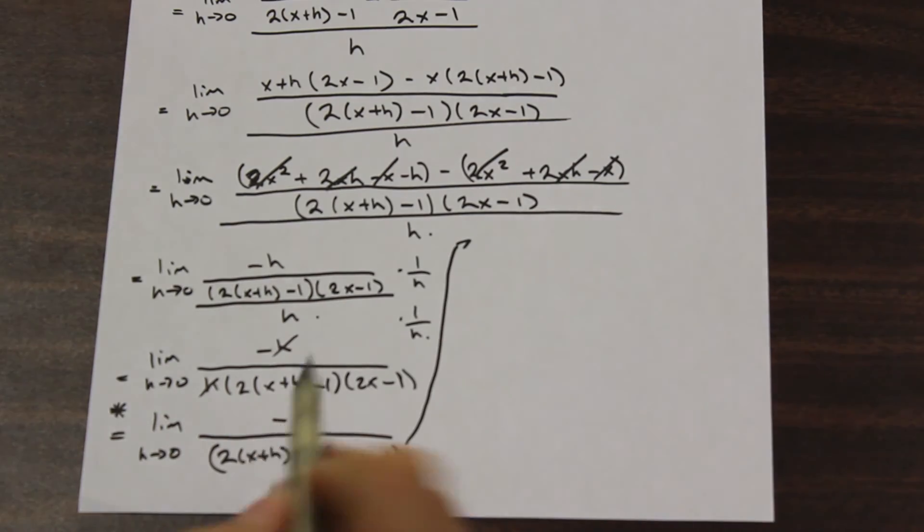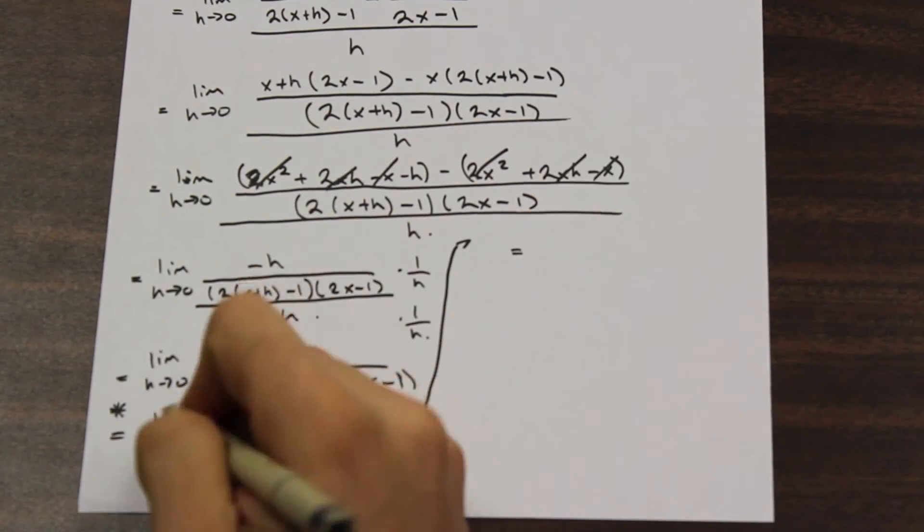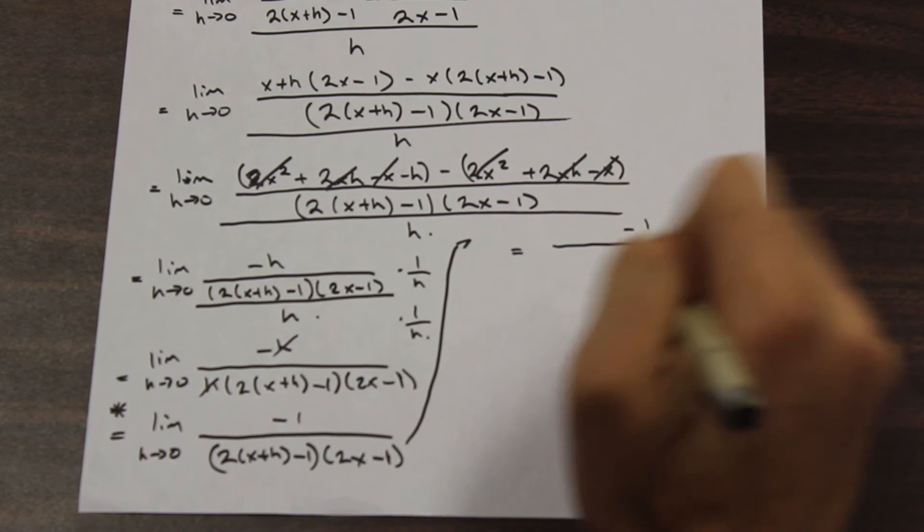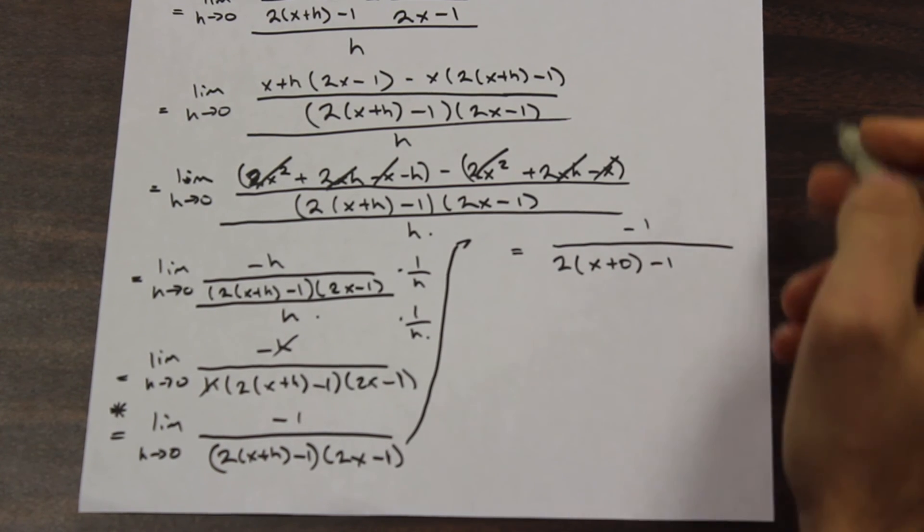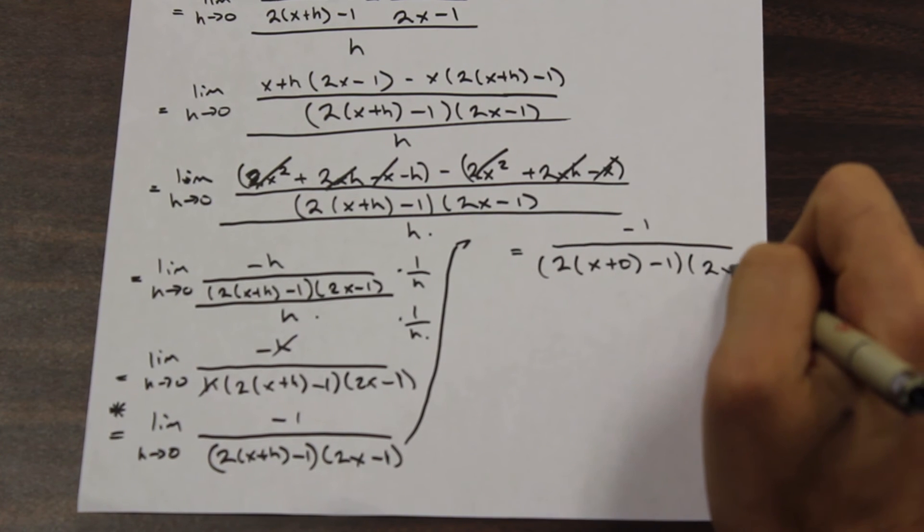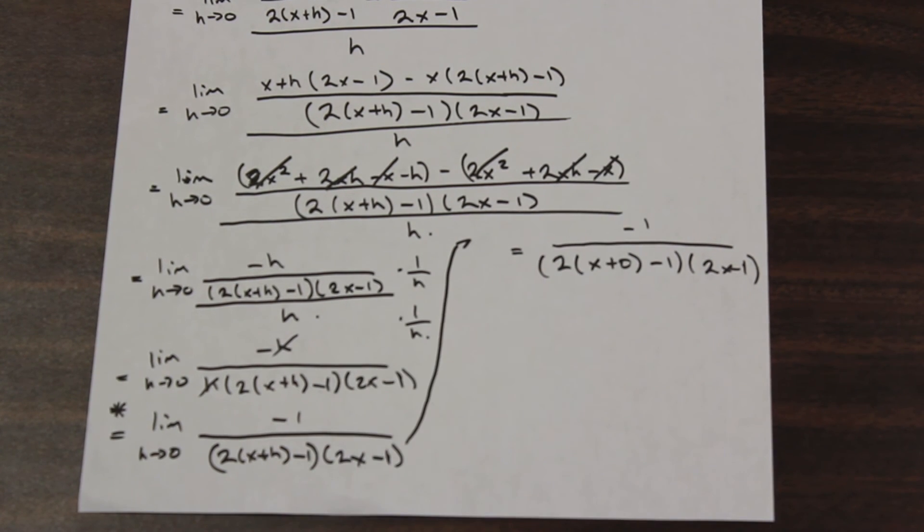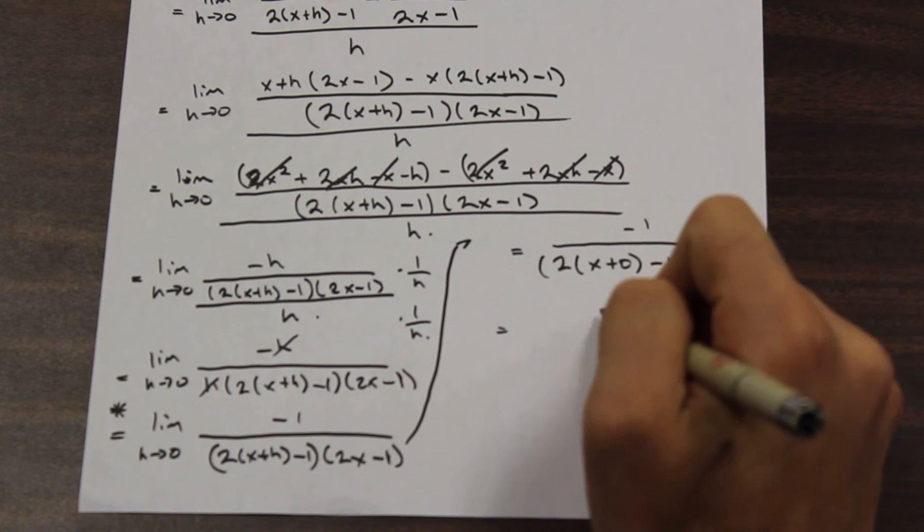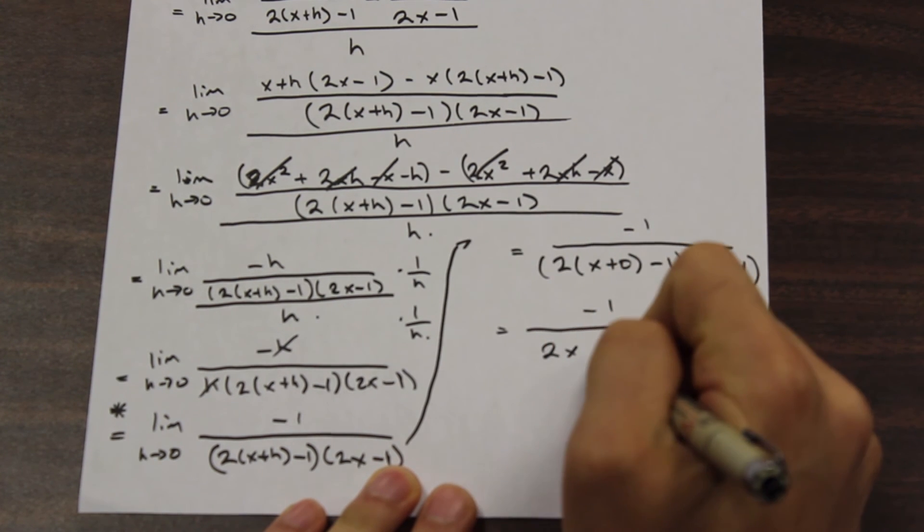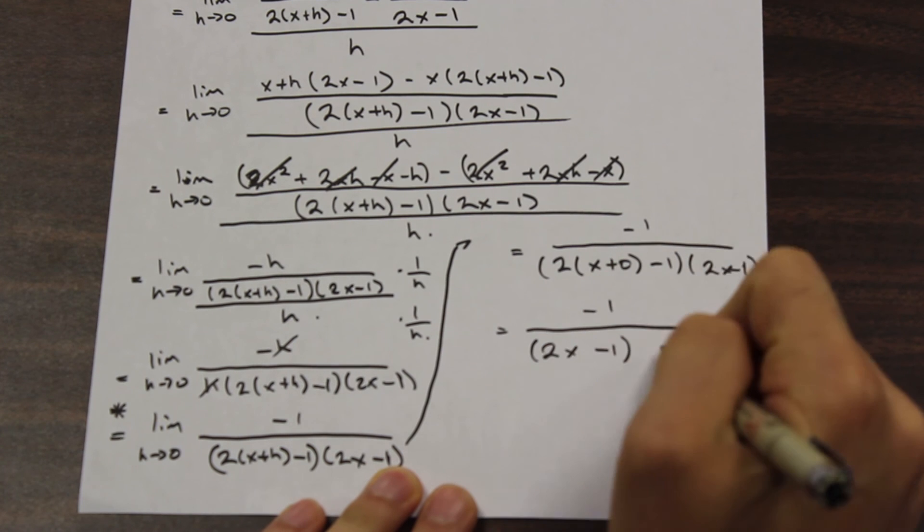So we have, and we'll take the limit sign away because now it's applied. We have negative 1 over (2x+0-1) times (2x-1). And x plus 0 is just x, obviously. So we're left with, if we go ahead and simplify that, negative 1 over (2x-1) squared.